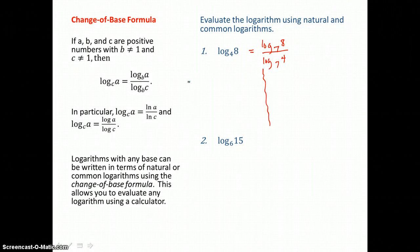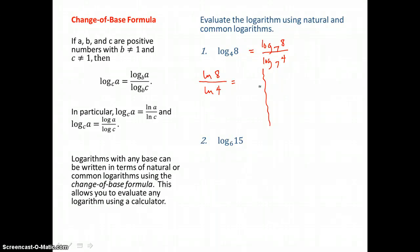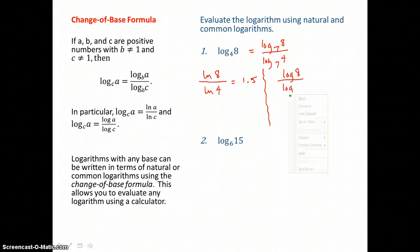So instead, we write log base 4 of 8 as ln of 8 over ln of 4 and use our calculator. Typing in ln of 8 divided by ln of 4, I get 1.5, or 3 halves — the power that you raise 4 to to get 8. If I use the common log, log of 8 divided by log of 4, I get the same thing: 1.5. So it doesn't matter whether we use the natural log or the common log — we'll get the same value.